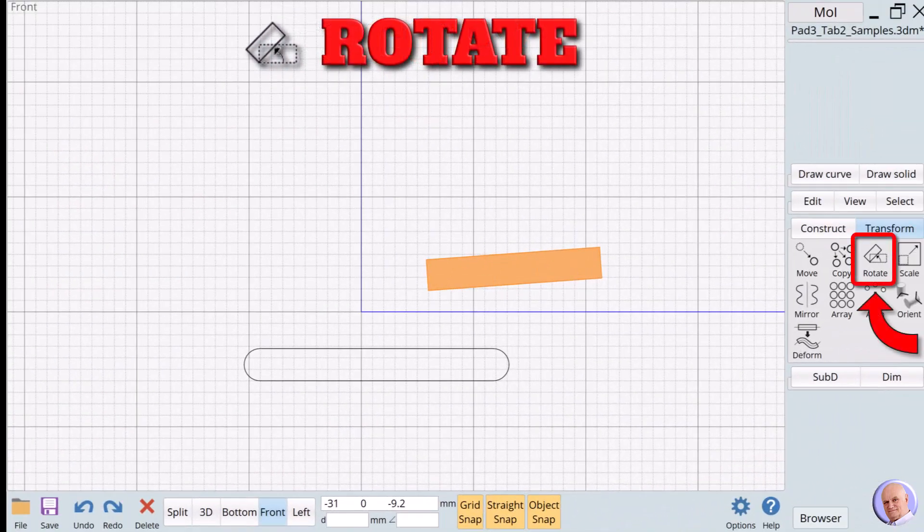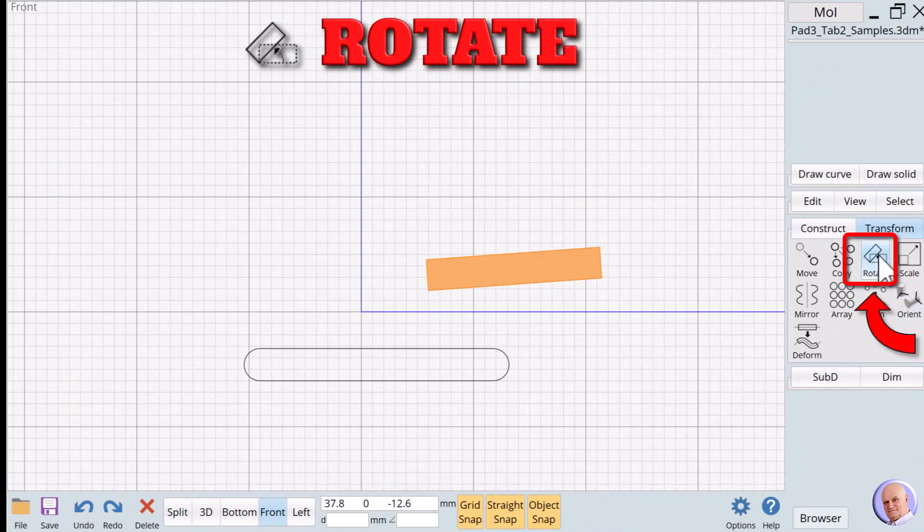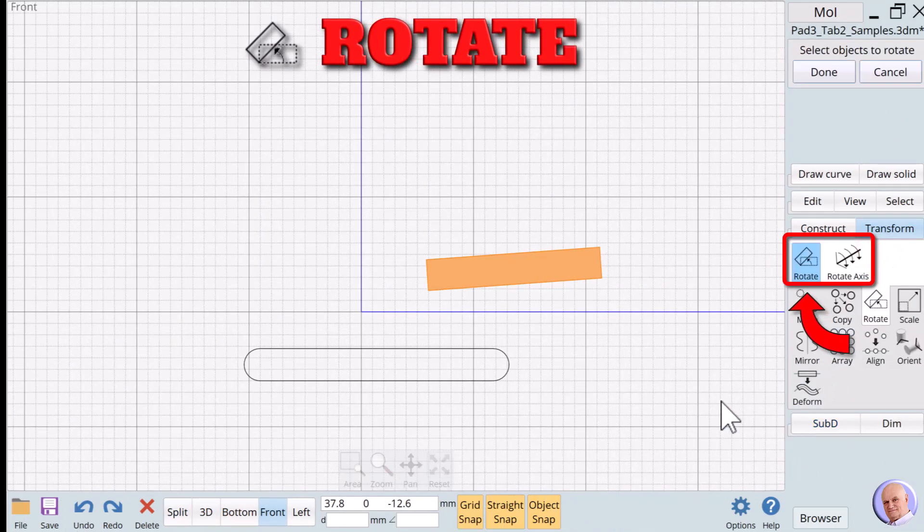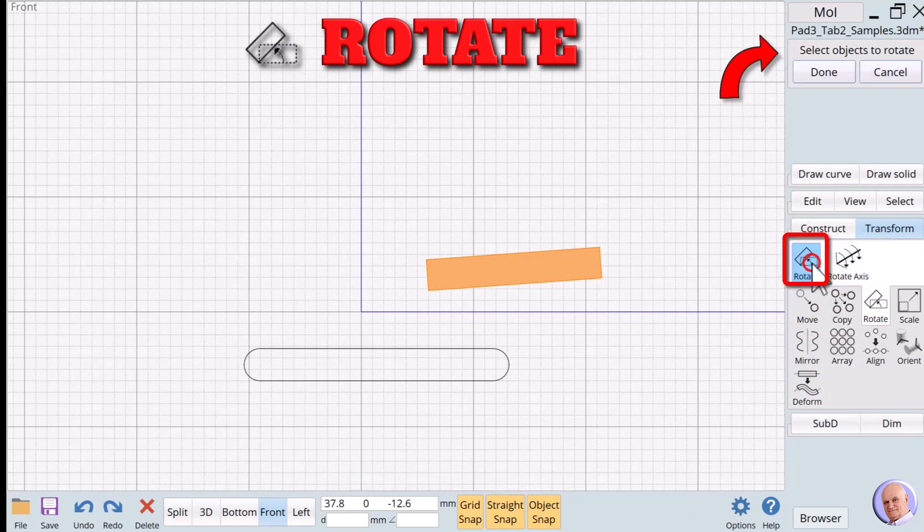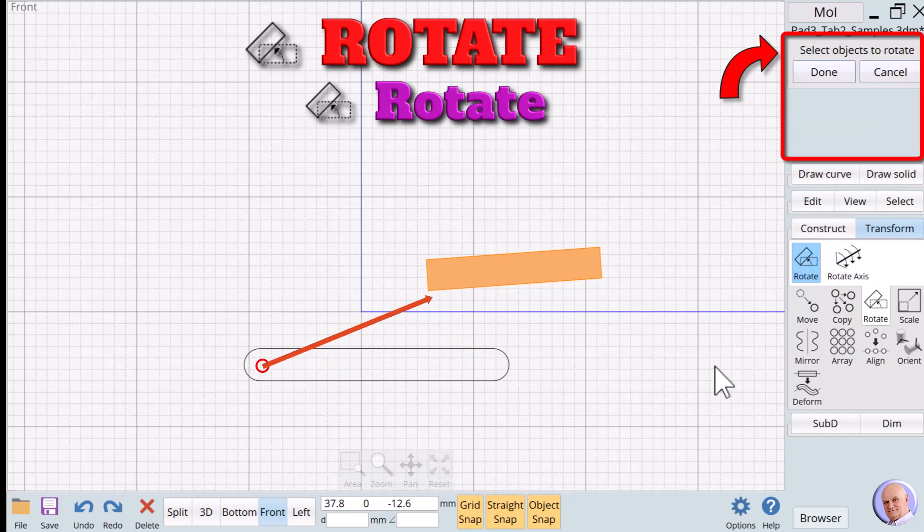The rotate verb group. We open the rotate verb group by clicking on the rotate button. It reveals two rotate verbs, rotate and rotate axis. The rotate verb uses a selected point as the center of rotation to change the orientation of an object.